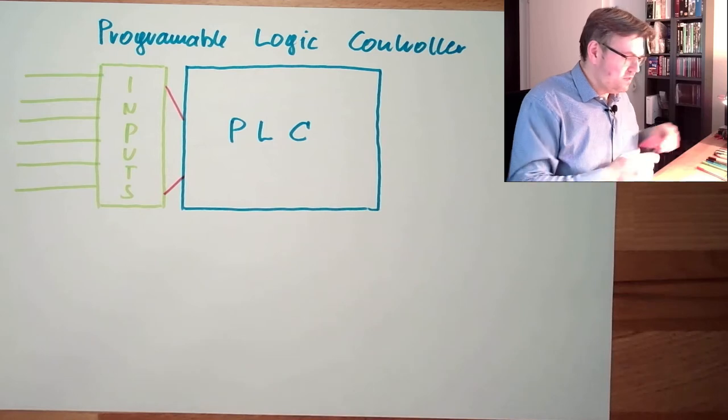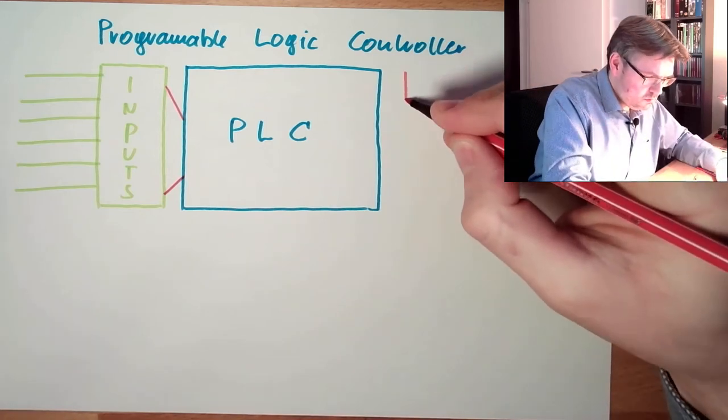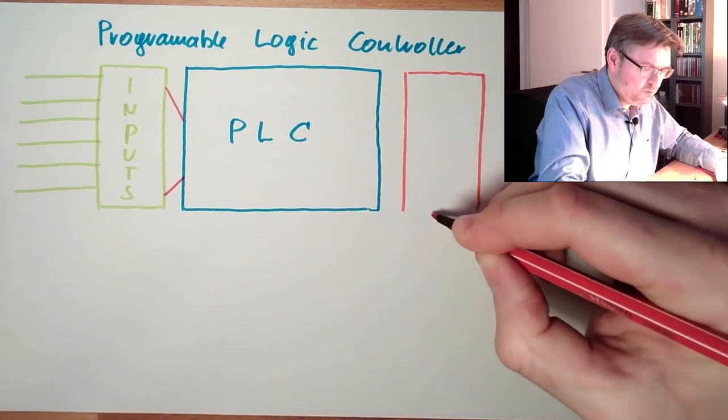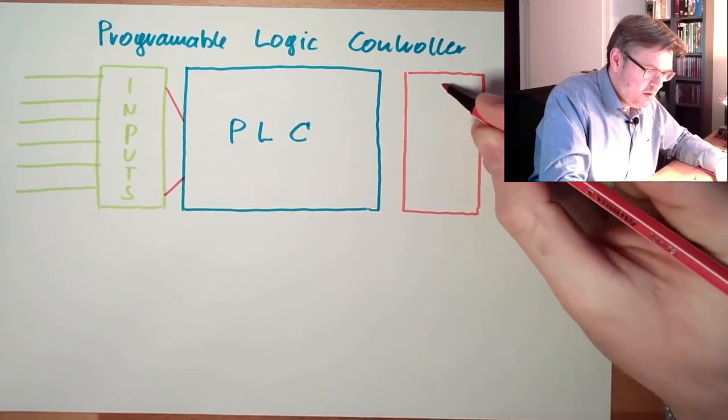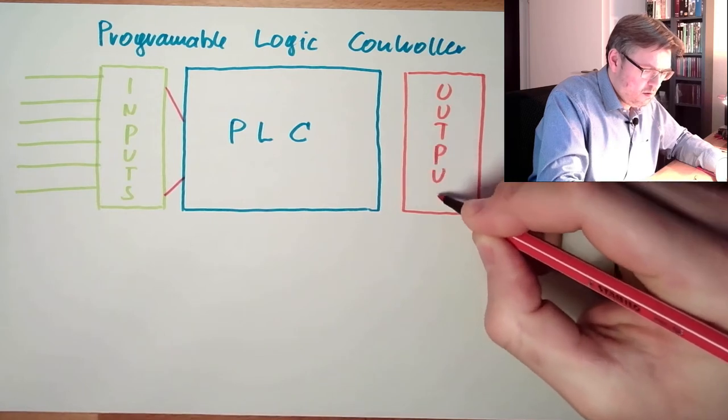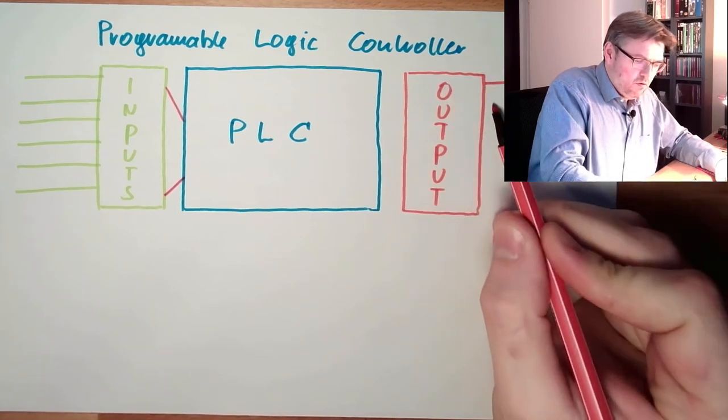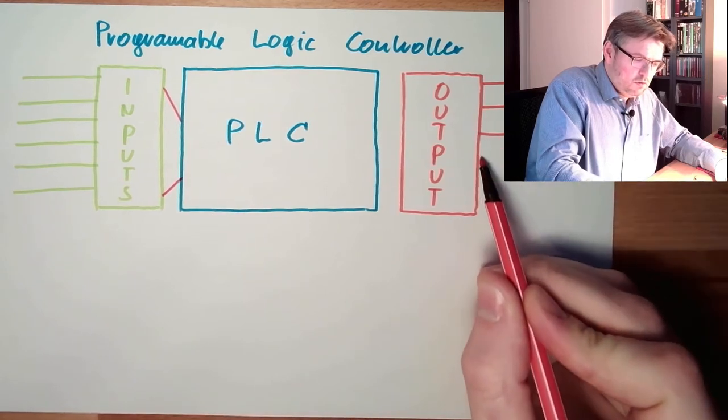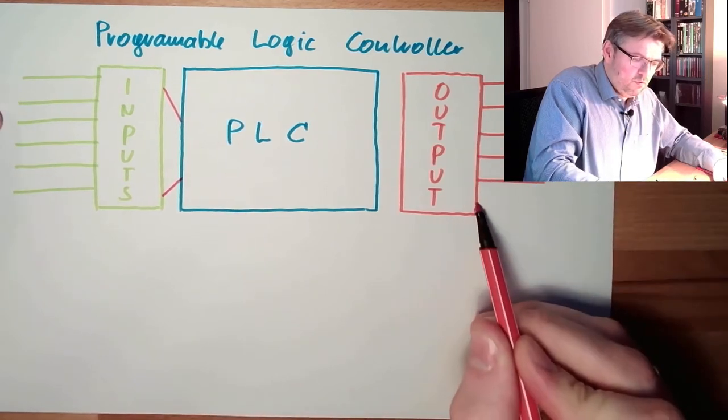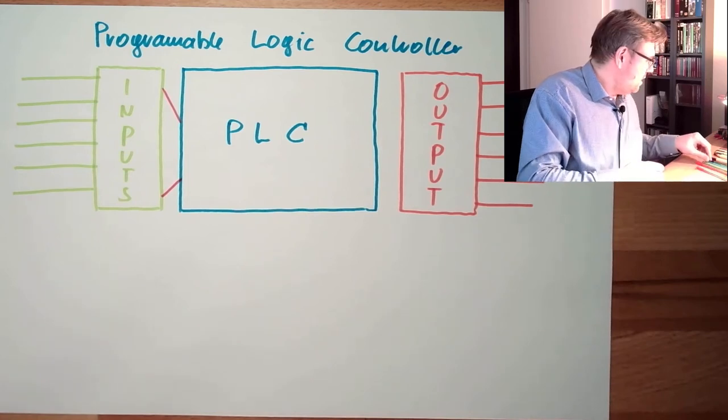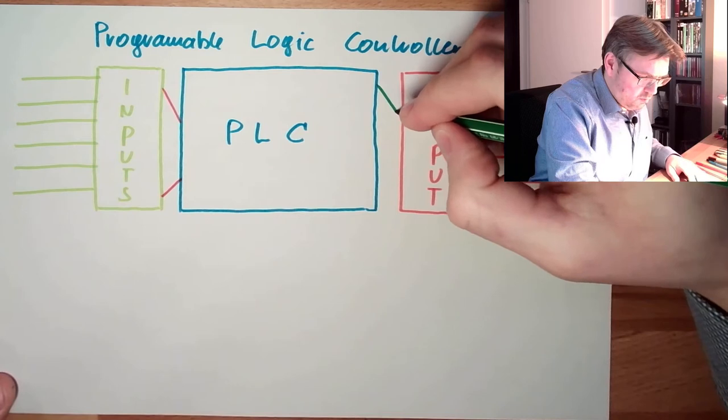And we have some outputs. Also here, different type of outputs. Might be analog outputs, voltage, current, digital outputs, and so on. And the PLC is then writing to these outputs.